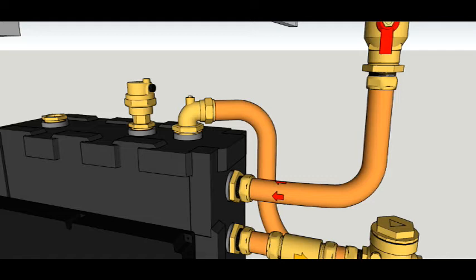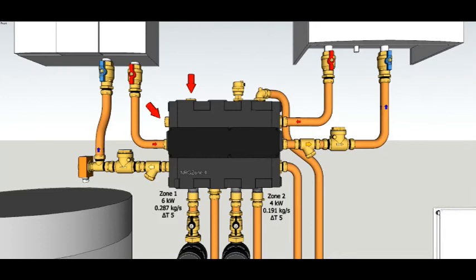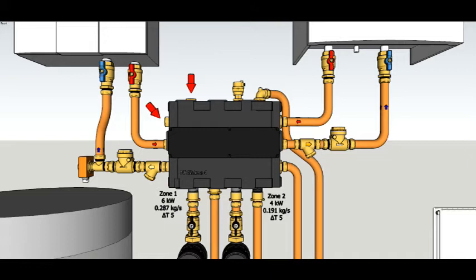You can see the two arrows at the top right hand corner - they're spare ports that could be used for instance for filling the system, or maybe you want to use the top one for adding chemicals into the system. This replaces the dosing pot but it puts the water or the chemicals directly into the path of all of the water in the zones and all of the water heading back to the boiler. It couldn't be a better location to put a dosing pot.